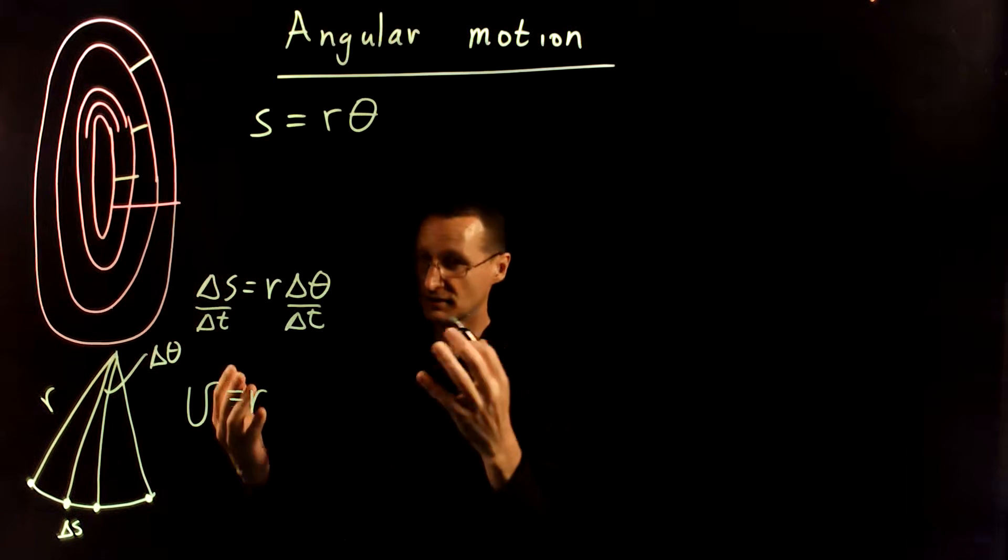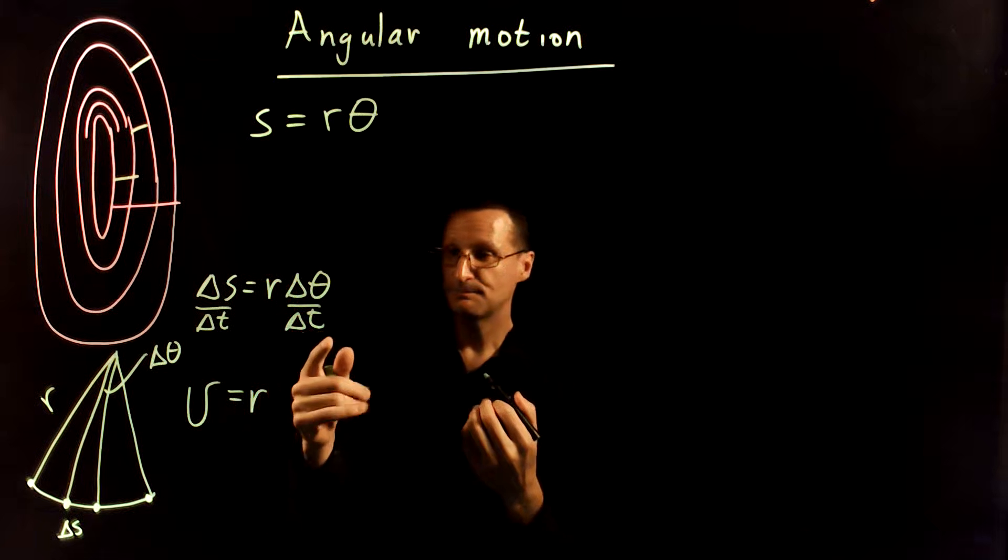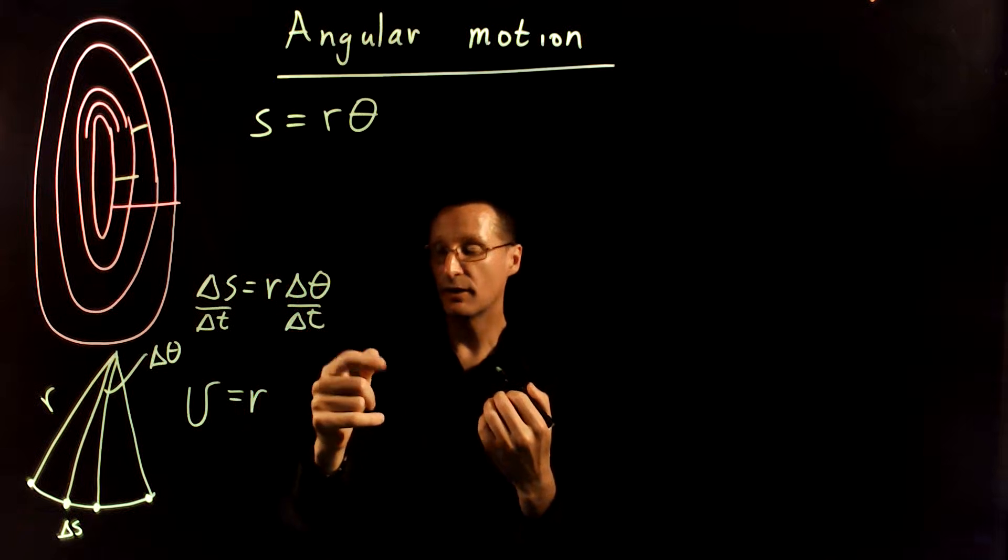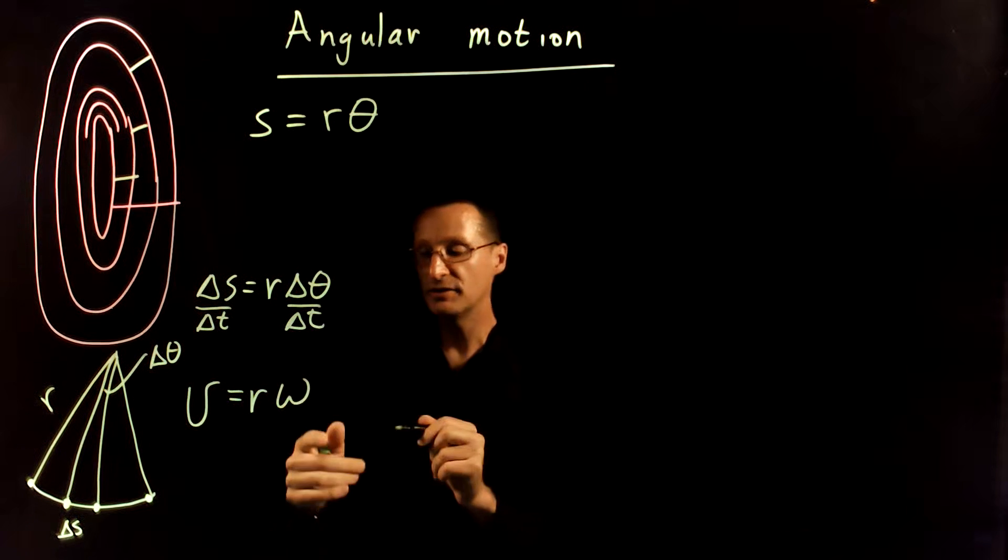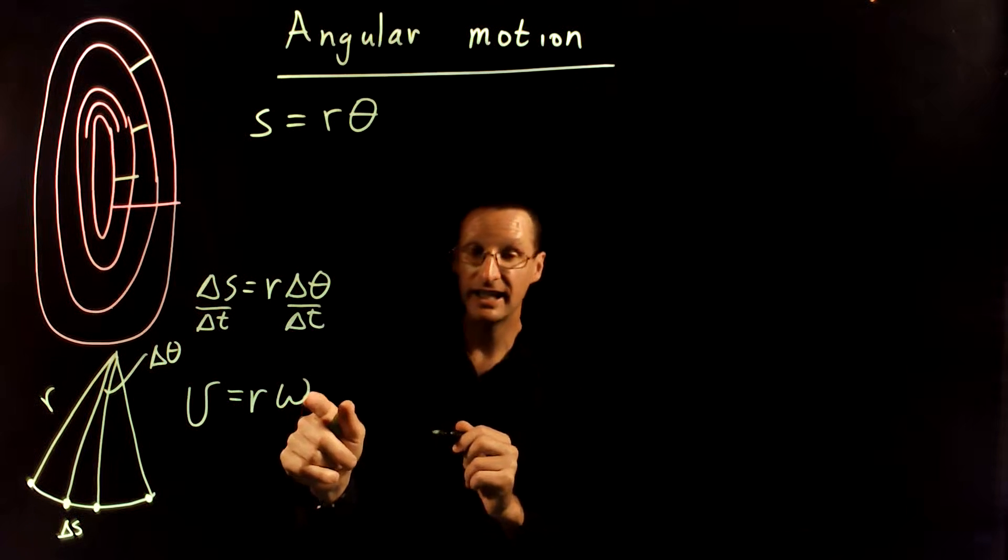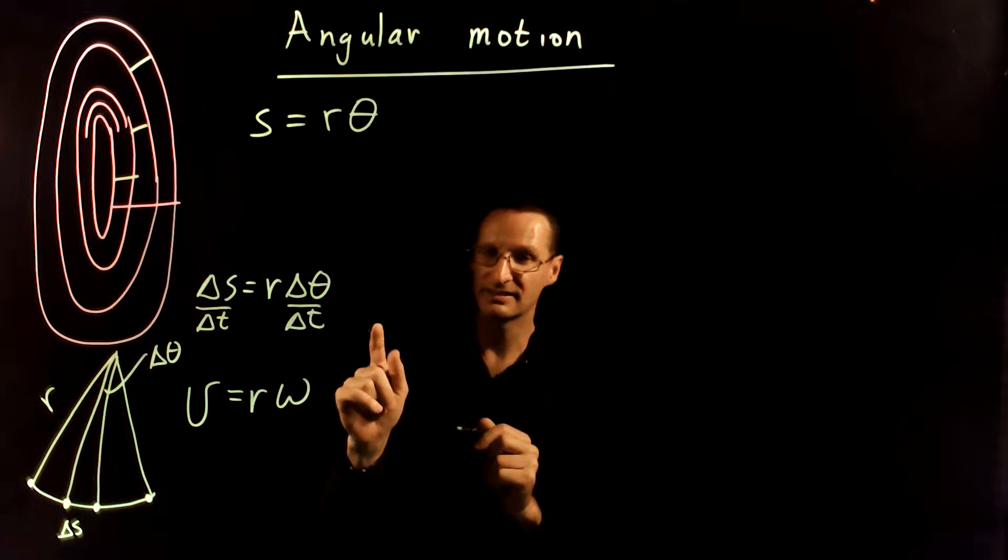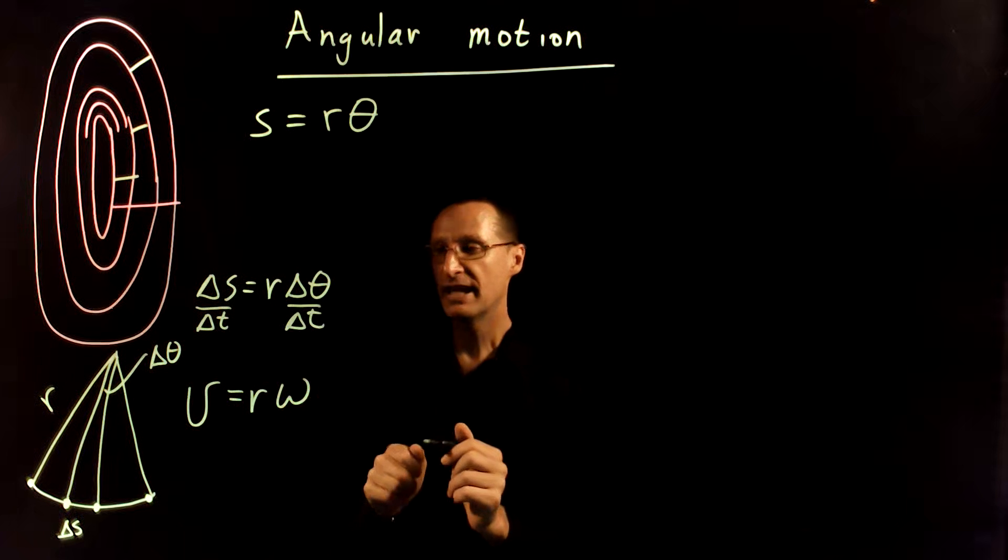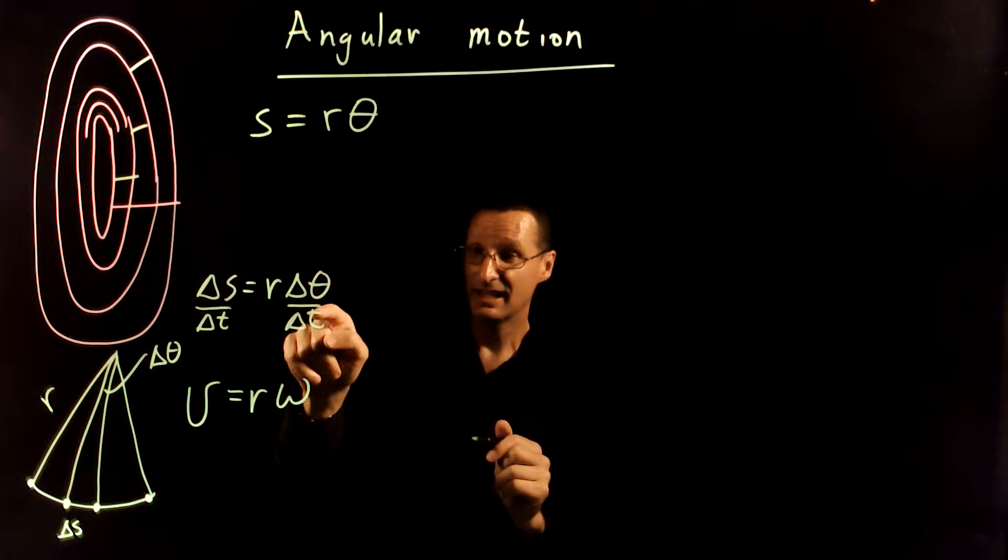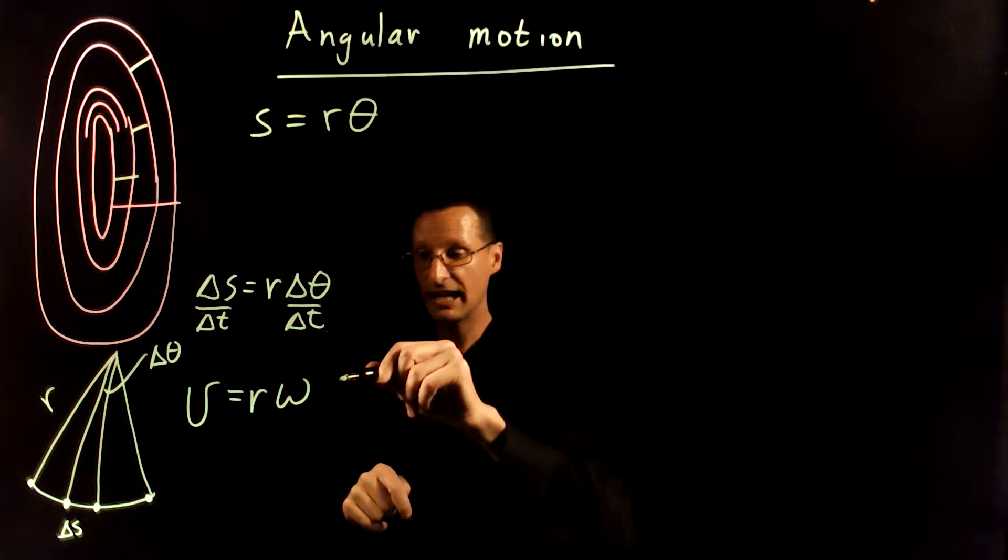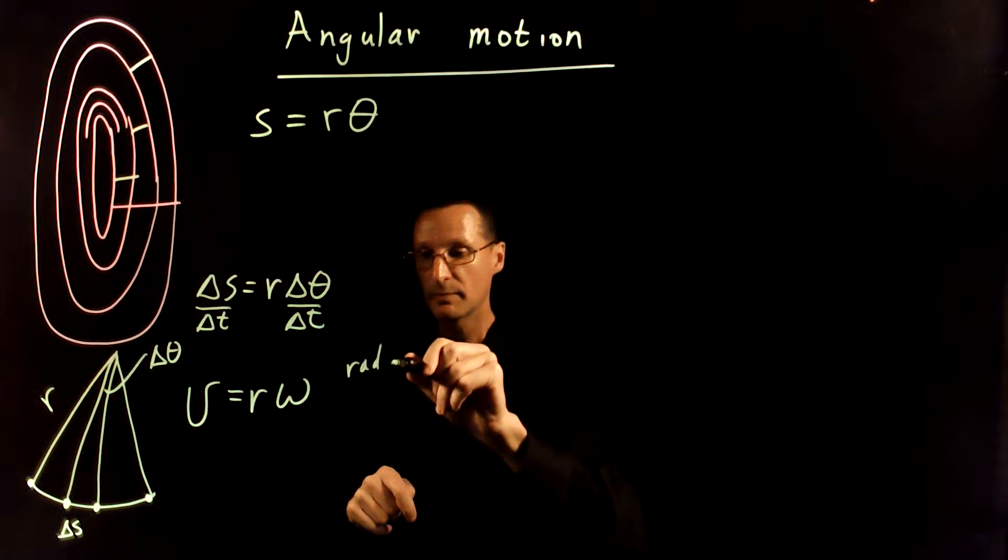R is just R. That hasn't changed with time. What I have here is delta theta over delta T. That's angular velocity. And so I'm going to use the Greek letter omega, lowercase omega. It looks like a W, but it's not a W. It's an omega. And because angular displacement has units of radians, and I'm dividing by time, this is going to have units of radians per second.